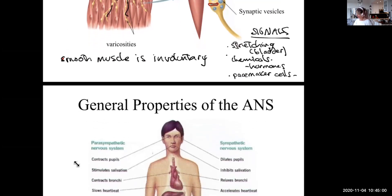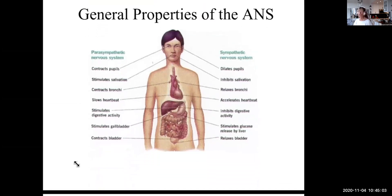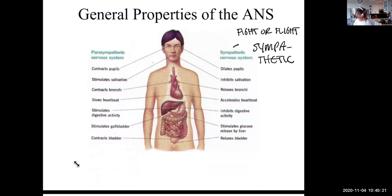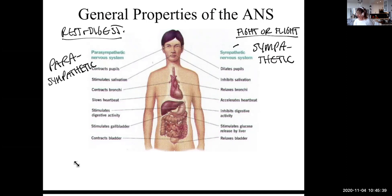That's an example of an autonomic function. The autonomic nervous system has two main divisions. Sympathetic is also known as the fight or flight response. Parasympathetic is also known as rest and digest. Generally, these two systems have antagonistic effects on the autonomic nervous system.